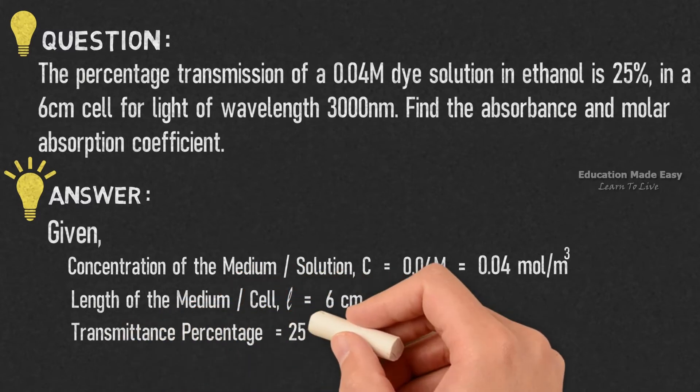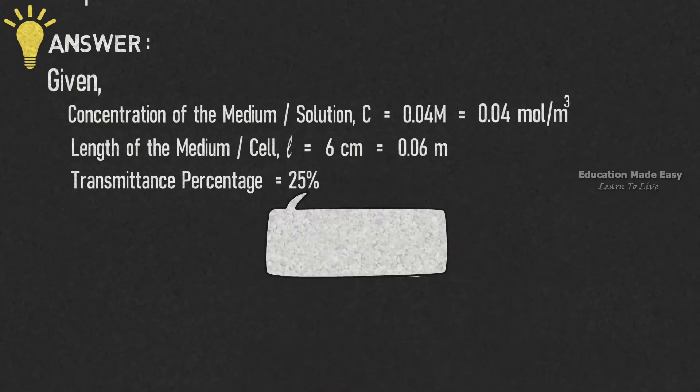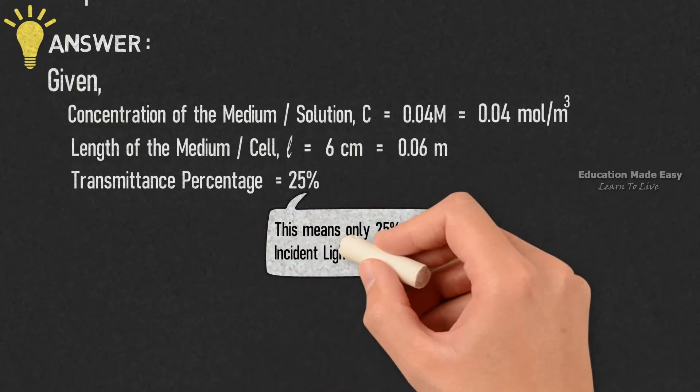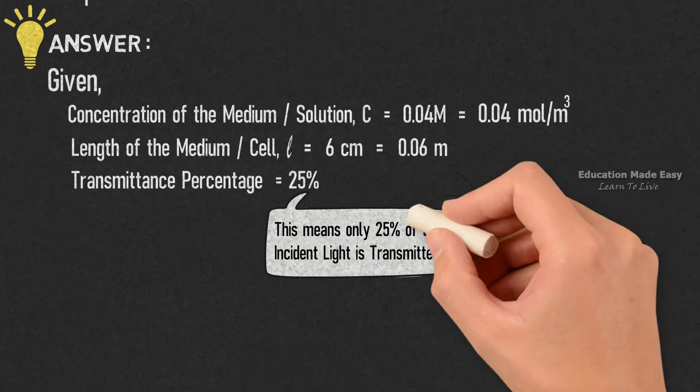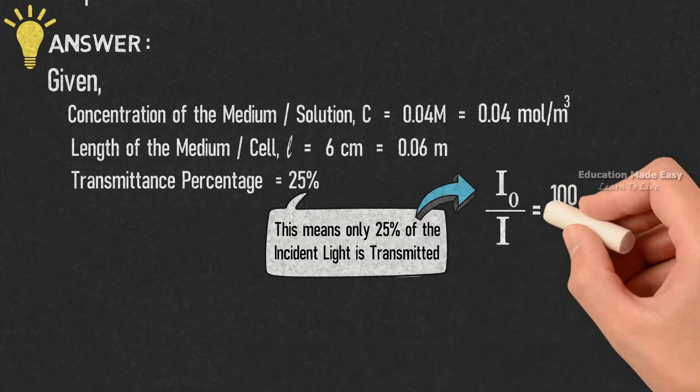From the question, we got the transmittance percentage is equal to 25%, but what does this 25% mean? This means only 25% of the incident light is transmitted which in turn means I₀ divided by I is equal to 100 divided by 25.